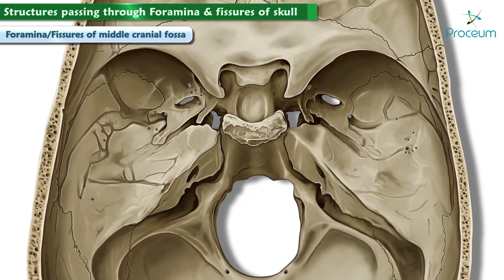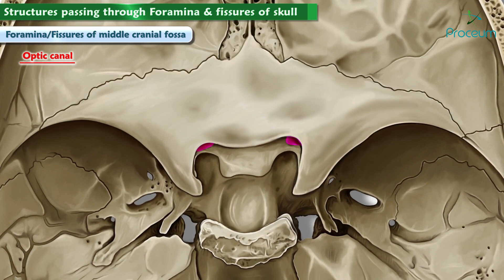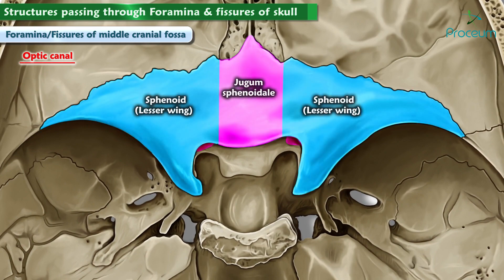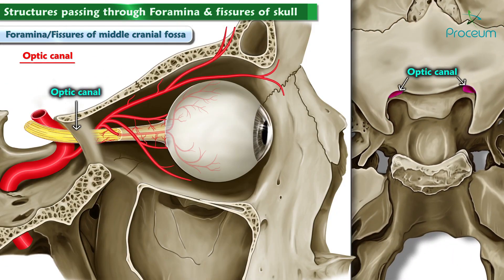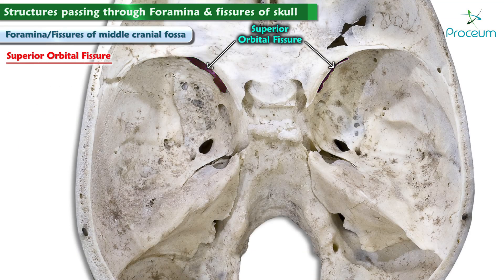There are more foramina seen in the middle cranial fossa in comparison with the anterior or posterior cranial fossa. The optic canal lies within the lesser wing of the sphenoid bone, just anterior and medial to the anterior clinoid process of the sphenoid bone. The optic canal allows the ophthalmic artery, which supplies blood to the retina of the eye, and the second cranial nerve, the optic nerve, which sends visual information from the eye to the brain.